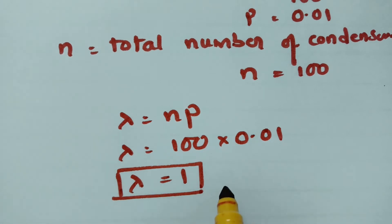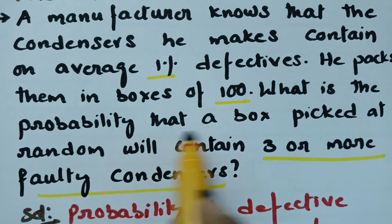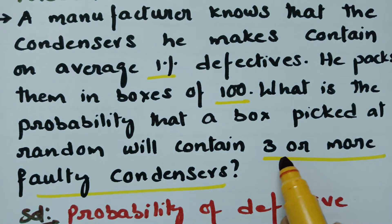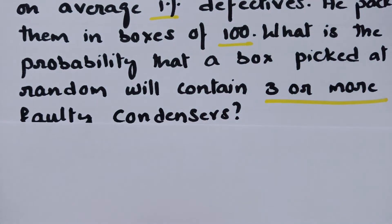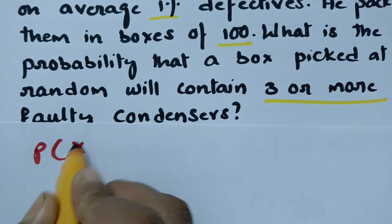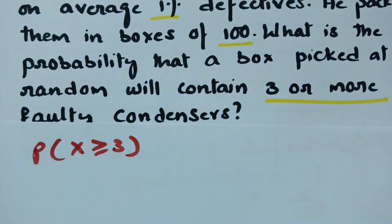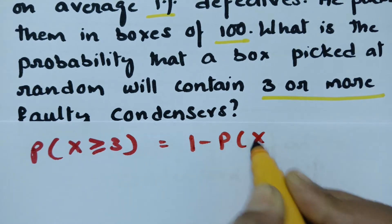The mean value is equal to 1. We have to find out: what is the probability that a box picked at random will contain 3 or more faulty condensers? 3 or more means we need probability of x greater than or equal to 3. Otherwise, we can write this as 1 minus probability of x less than 3.